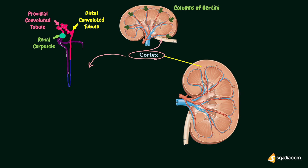There is inner medulla. Medulla contains tubular and vascular structures arranged in parallel radial lines. Medullary mass is divided into 8 to 18 medullary or Malpighian pyramids. The broad base of each pyramid is in contact with cortex and the apex projects into minor calyx.